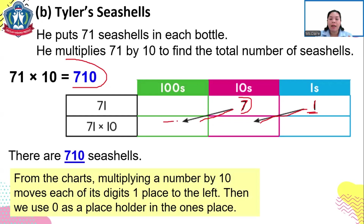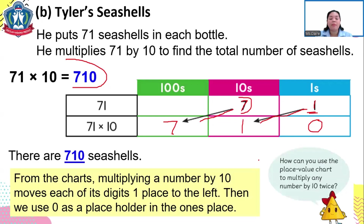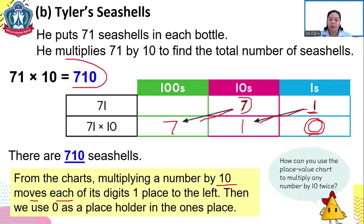The digit 7, which represents 70, moves to the hundreds place so it becomes 700. Adding zero as a placeholder, 71 times 10 becomes 710. From this, we see that multiplying a number by 10 moves each digit one place to the left, and we use zero as a placeholder in the ones place. Zero is a very important digit.